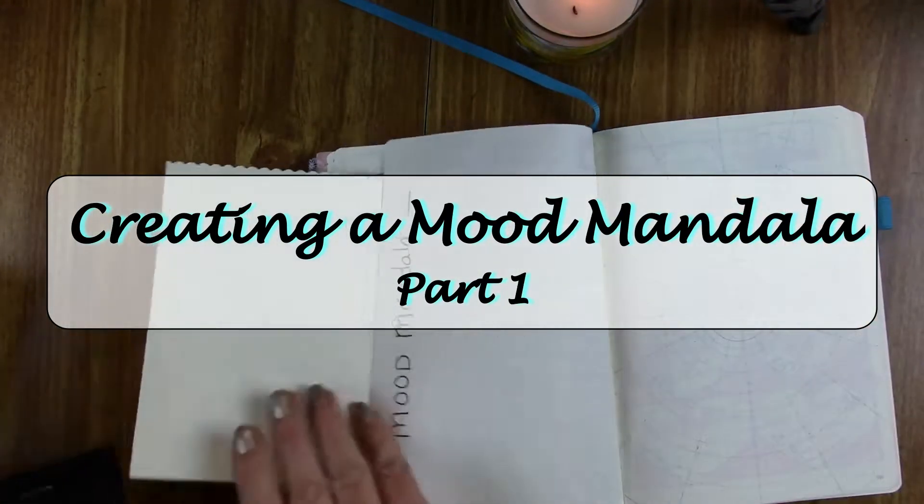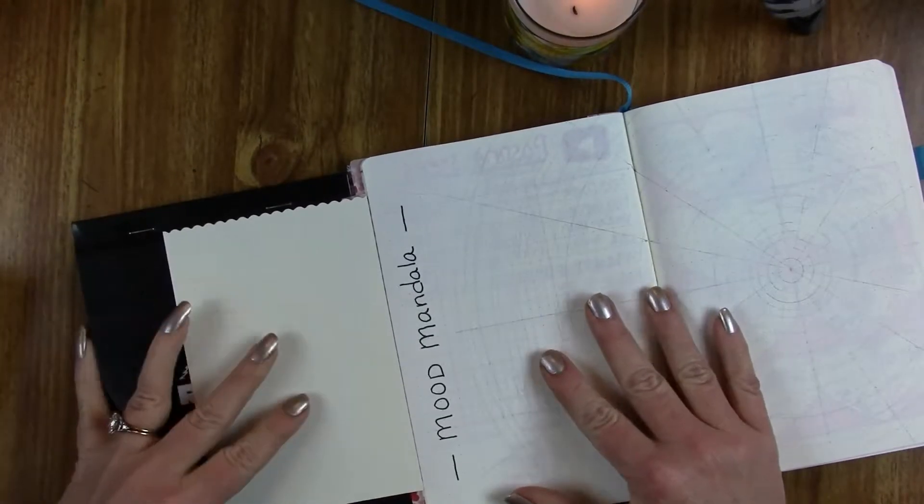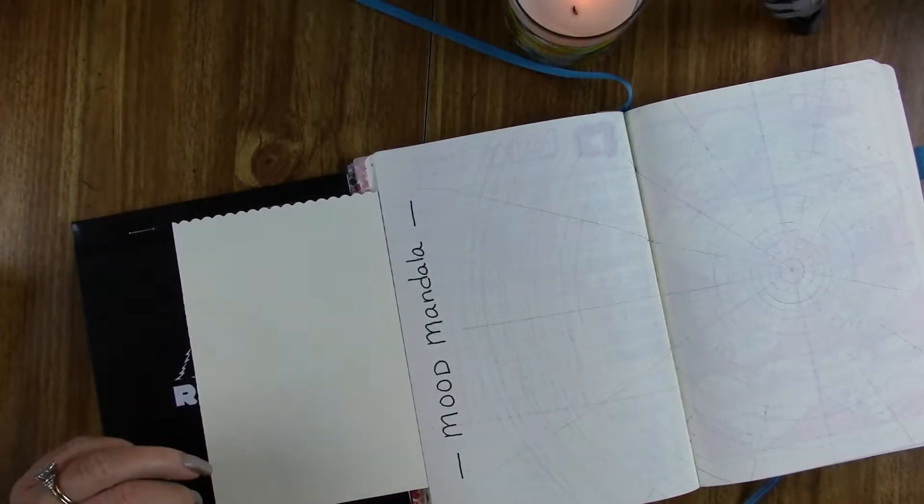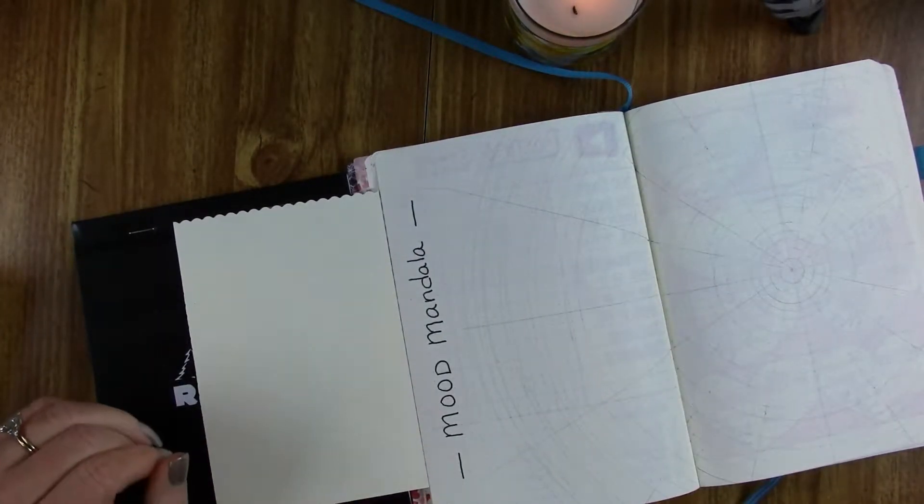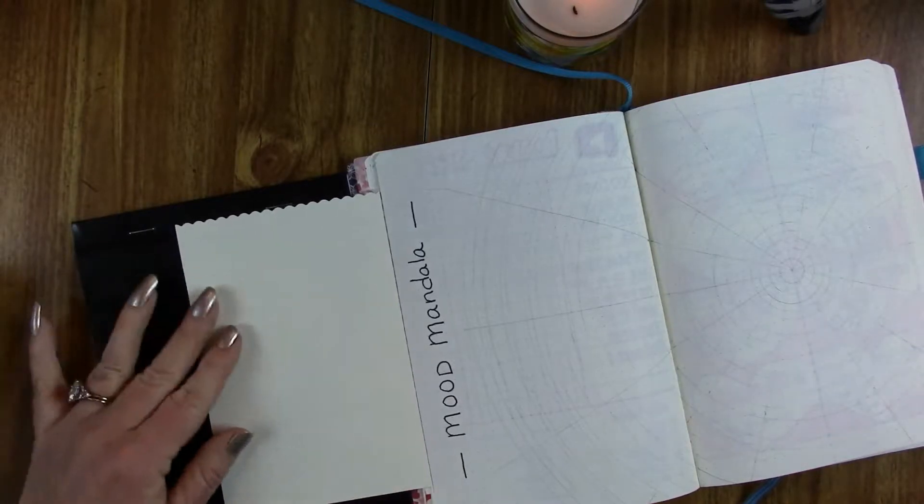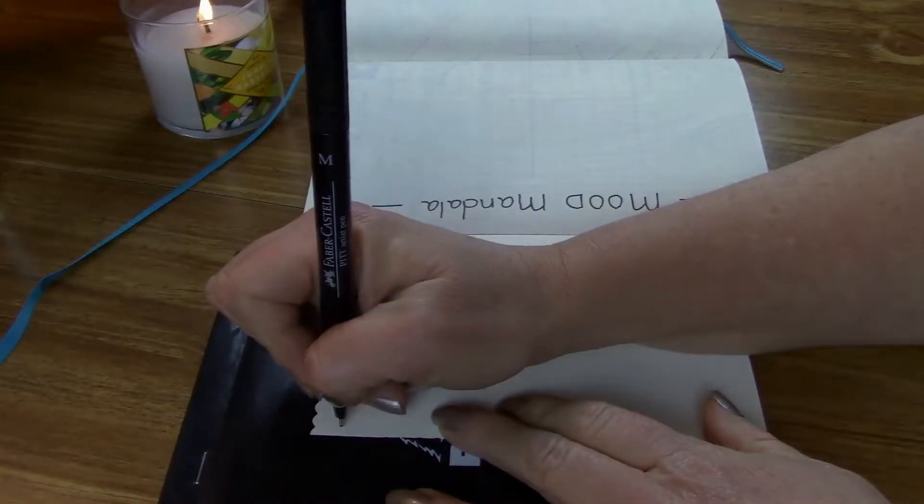So I'm gonna show y'all how I started off mine for February. I'm sticking with a limited color palette this month, primarily pink, red, and cream colors.